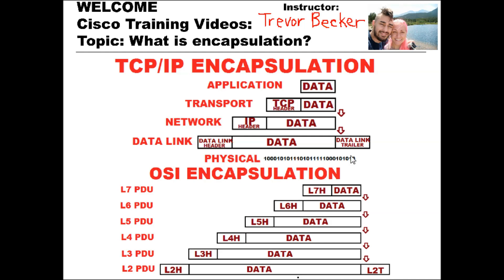At the physical layer, it's referred to as bits. The data link layer is referred to as frames. Network is referred to as packets. Transport is referred to as segments if you're using TCP, or datagrams if you're utilizing UDP. And at the application layer, we simply refer to this as data.